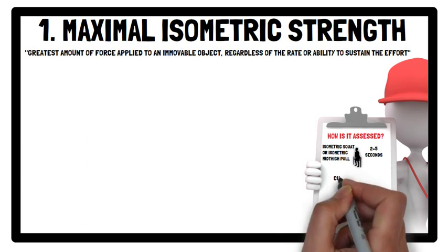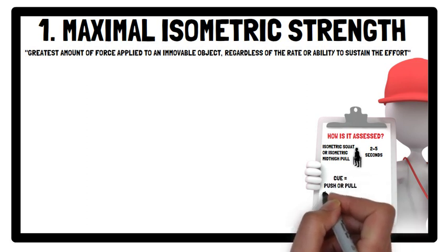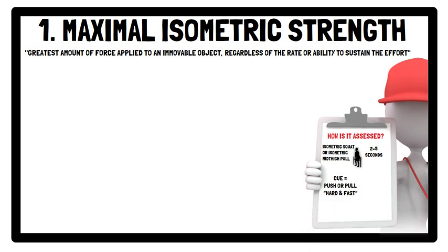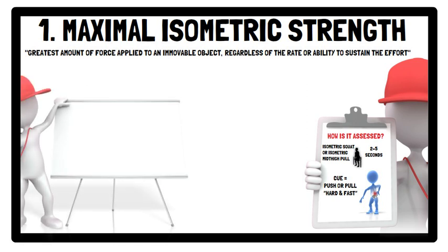The cue to produce maximal force is typically 'hard and fast'; however, a gradual rise to peak force over several seconds has also been used, mainly for the isometric squat, to help reduce the likelihood of injury from sudden maximal loading from the bar being placed across the shoulders. However, it is unclear how the maximal force output differs between a fast and slow cue, so it is recommended that the use of cues is kept consistent.